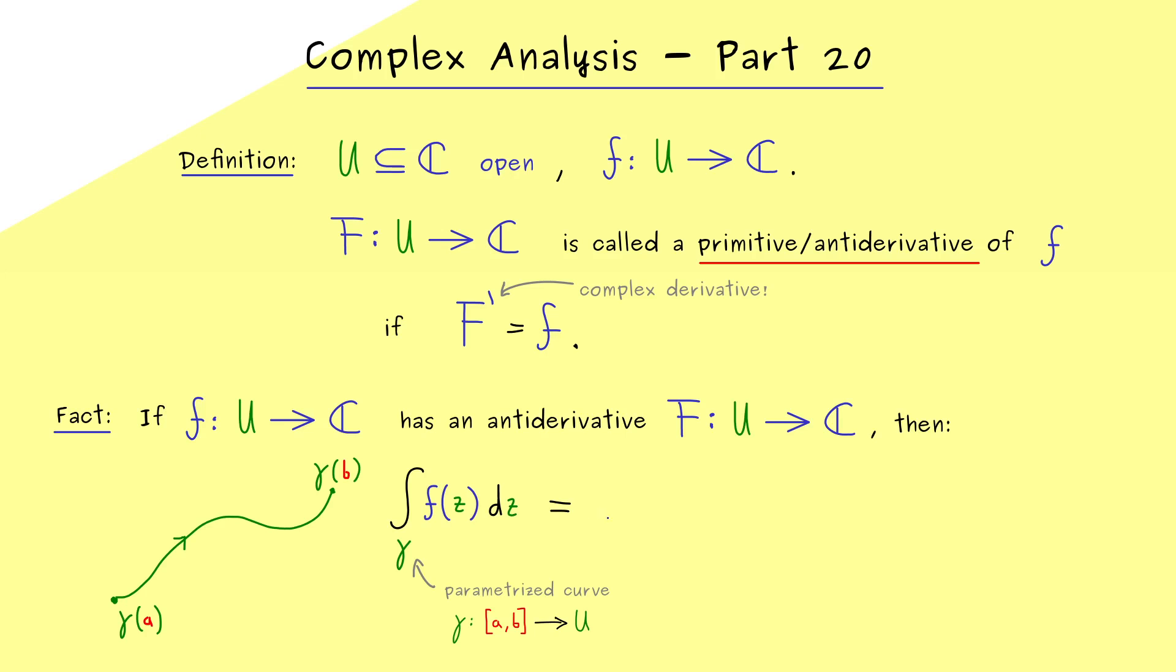And exactly at these points we can evaluate the anti-derivative capital F. And now it turns out that the difference between both points is exactly the contour integral. In other words here you see if we have an anti-derivative the way between both points does not matter for the integral.